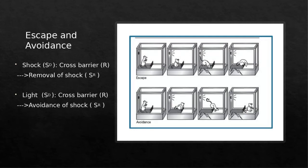In this case, the shock acts as a discriminative stimulus that lets the mouse know that if it engages in the response of crossing the barrier, the reinforcement will be the removal of the shock. This is escape because the mouse has to experience the aversive stimulus, then performs the response of jumping over the barrier, which leads to the reinforcer of having the shock removed.